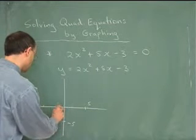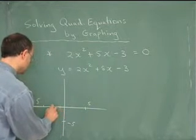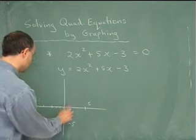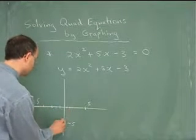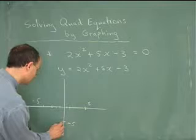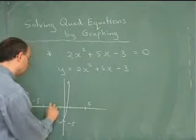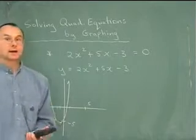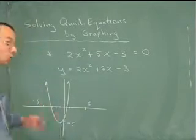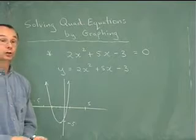And my graph looks something like this. It seems to cross here at negative 3, and looks like sort of in between here. And it sort of has a vertex down here somewhere. I just eyeballed that off the calculator. However, that's more or less what the picture should look like.